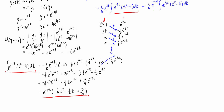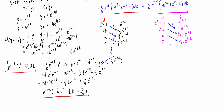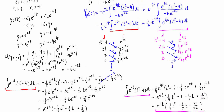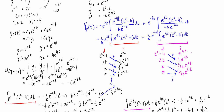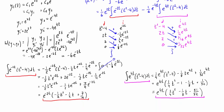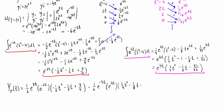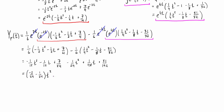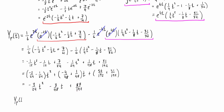That takes care of the first integral. We repeat the same integration by parts process for the second integral. Plugging both results back into the equation, the exponentials cancel out and it simplifies. Grouping all the t² terms, all the t terms, and all the constant terms together, we get (1/8)t² - (1/16)t + 29/64.